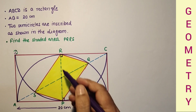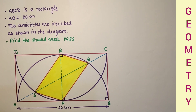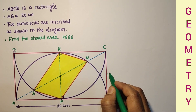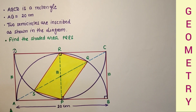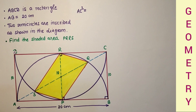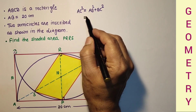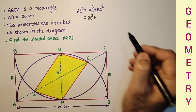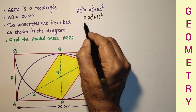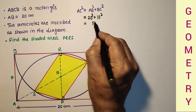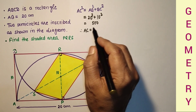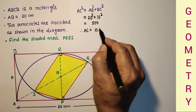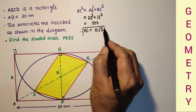We can use the right-angle triangle to find AC. AC² equals AB² plus BC², which is 20² plus 10², giving us 400 plus 100, which is 500. Therefore AC equals the square root of 500, which is the square root of 100 times 5, so AC equals 10√5 cm.